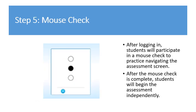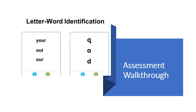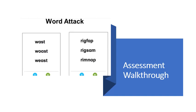Your student will complete a mouse check after logging in. This will just be a practice page to help them navigate and practice using a mouse on the assessment screen. After the mouse check is complete, students will begin the assessment independently. Students will be assessed on phonological awareness, letter word identification, and word attack skills.